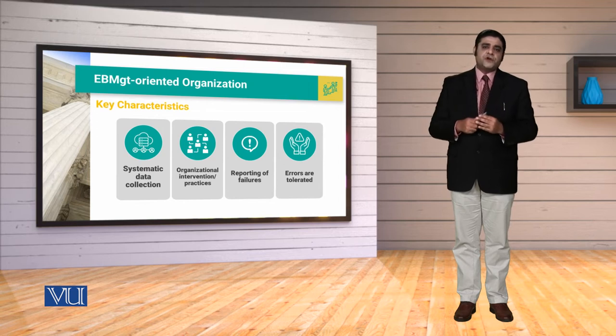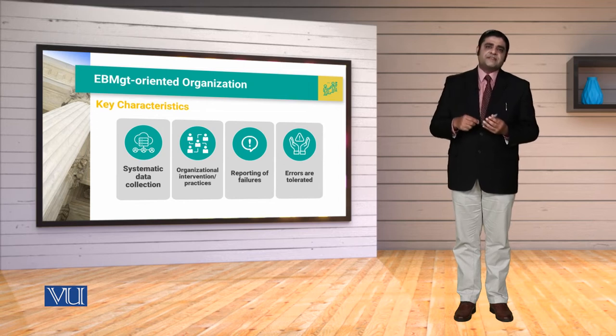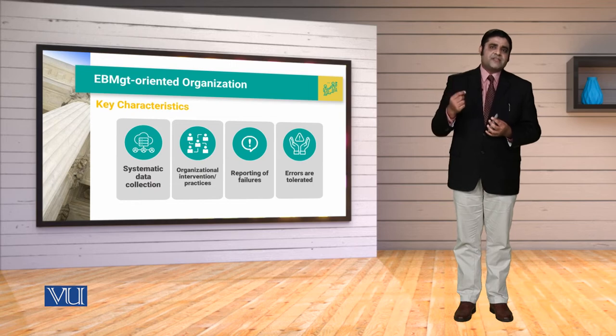The fourth thing is that errors are tolerated. اس کا مطلب یہ ہے کہ غلطی انسان سے ہو سکتی ہے — فیصلوں کے دوران بھی اور evidence collect کرنے کے دوران بھی۔ تو ہم کوشش اس بات کی کریں کہ اپنی غلطیوں سے سیکھیں اور ہمارے اندر flexibility ہو کہ ہم ان غلطیوں سے سیکھتے ہوئے فیصلوں کی corrections with the passage of time کر سکیں۔